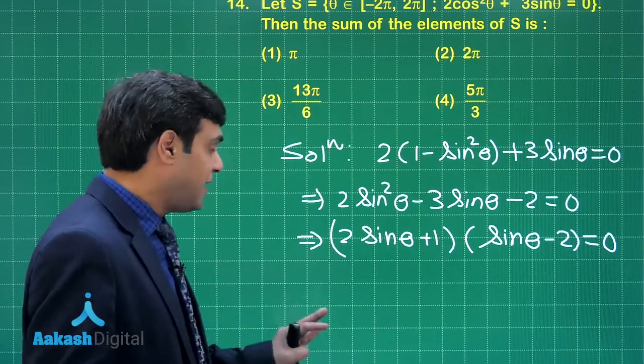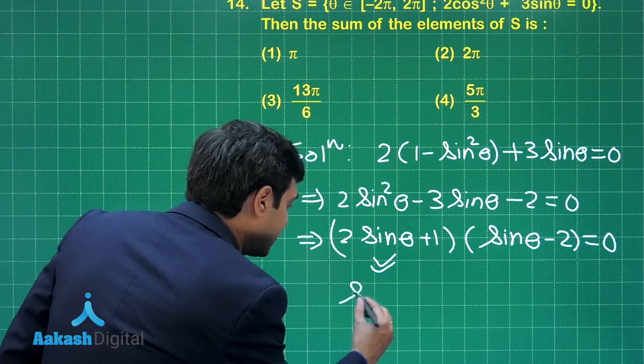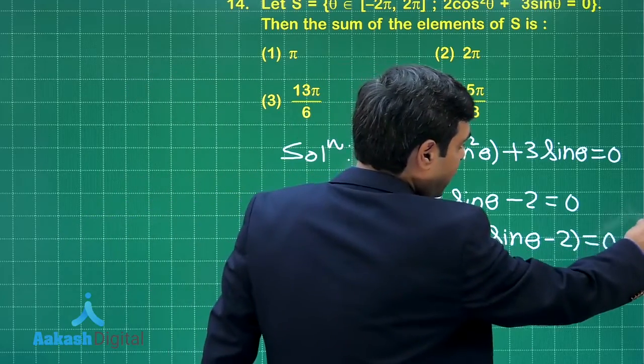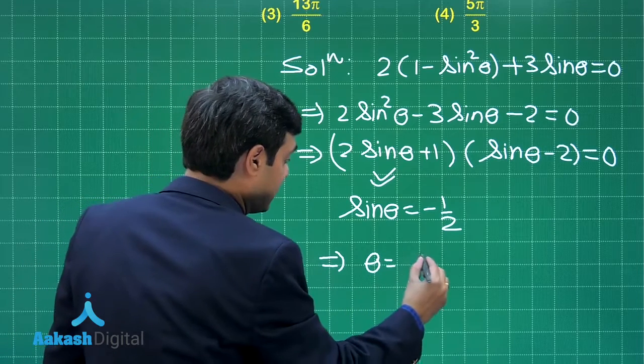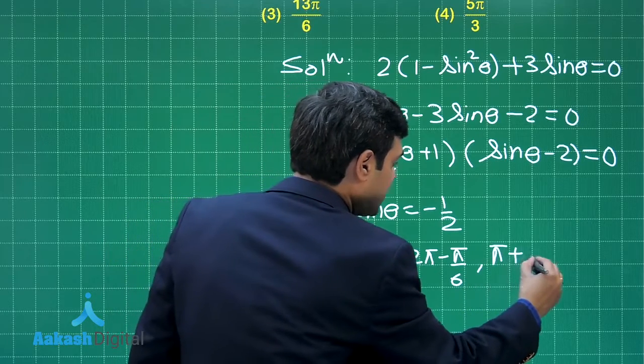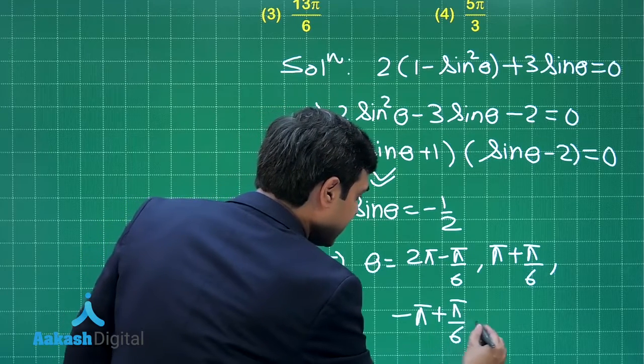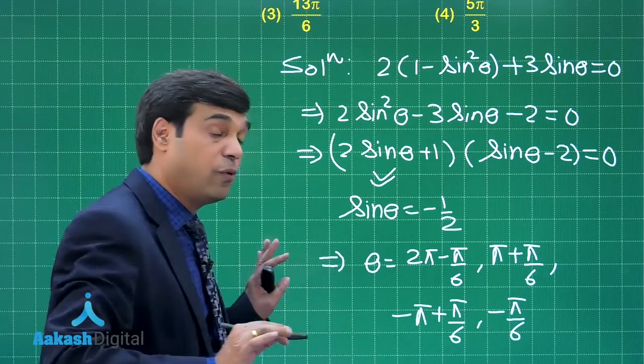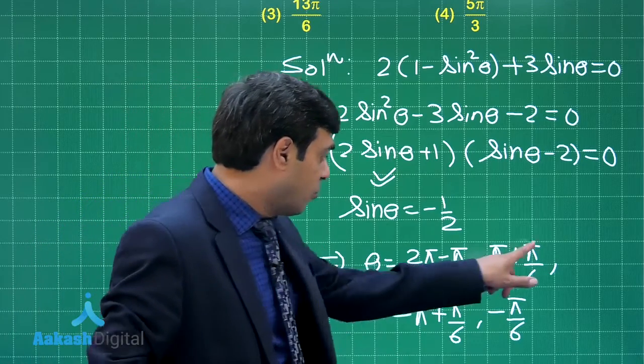Now sinθ - 2 cannot equal 0, so we get the solution sinθ = -1/2. Looking at the given interval, we get the solutions: θ = 2π - π/6, then -π + π/6, and -π/6. These are the four solutions in the given interval.